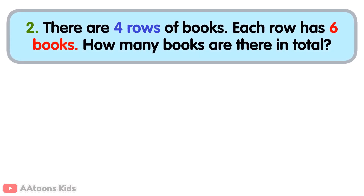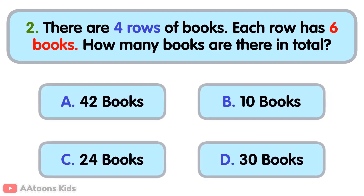There are four rows of books. Each row had six books. How many books are there in total?